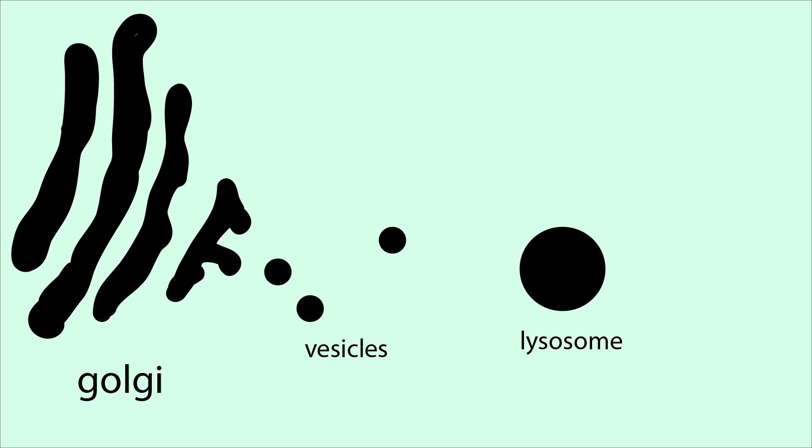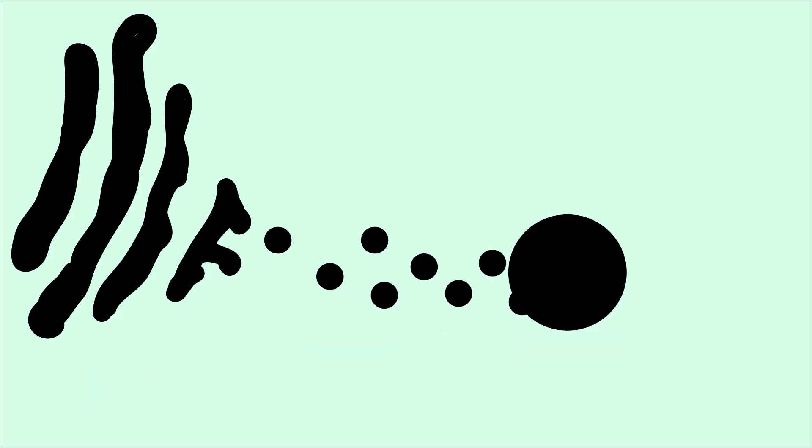Lysosomes are formed by enzyme-containing vesicles from the trans-Golgi. They are highly acidic, and their hydrolytic enzymes operate optimally under these conditions.